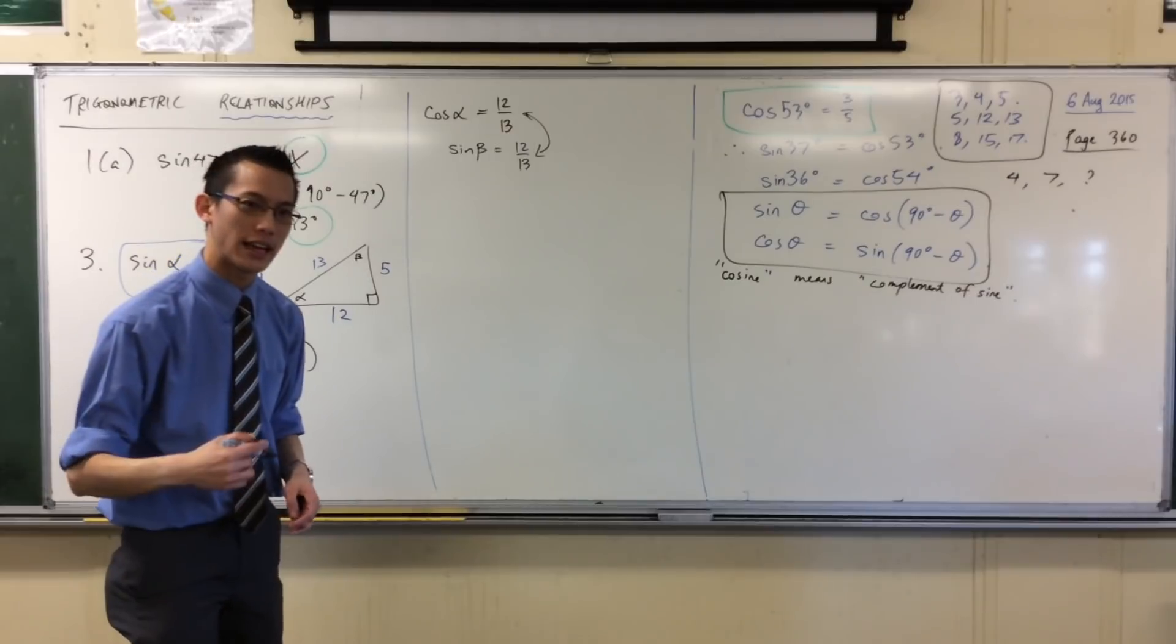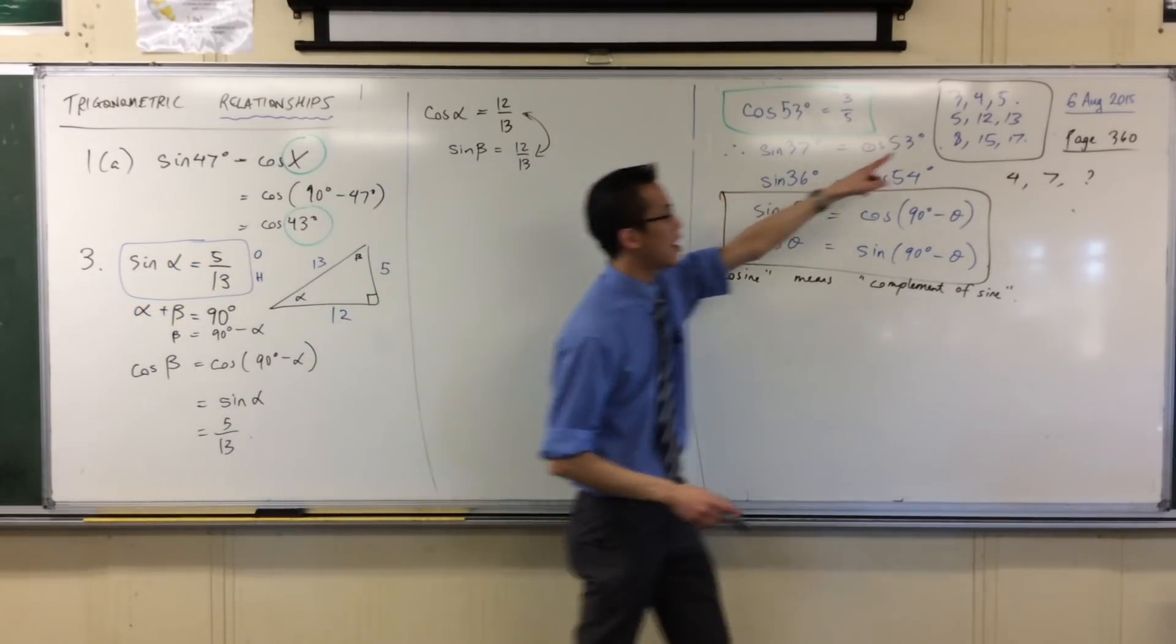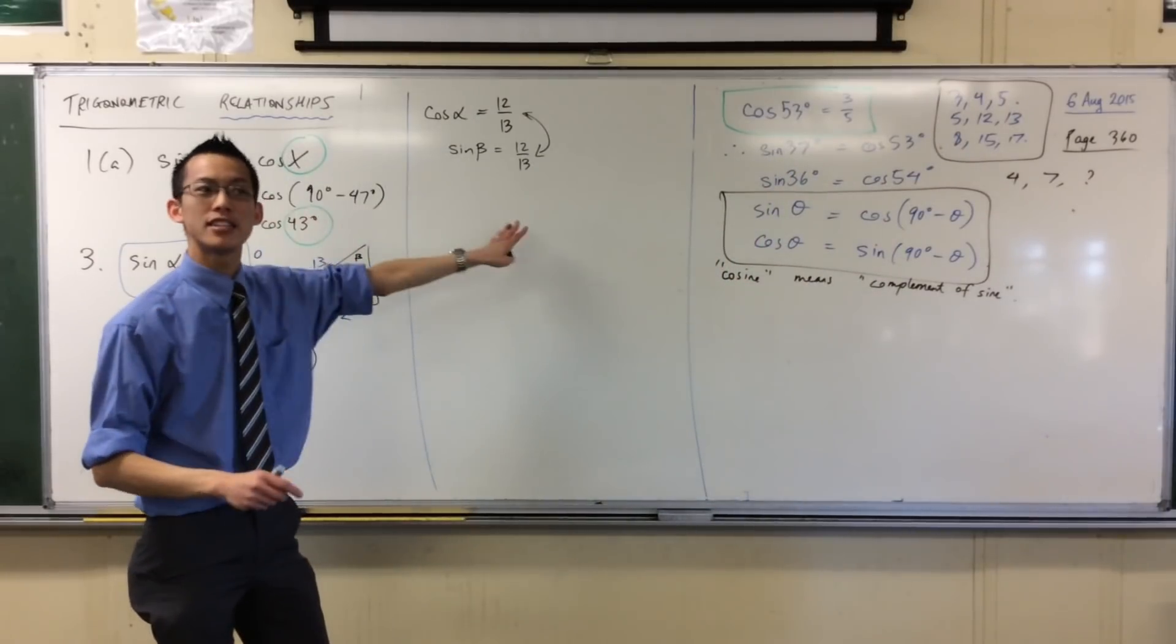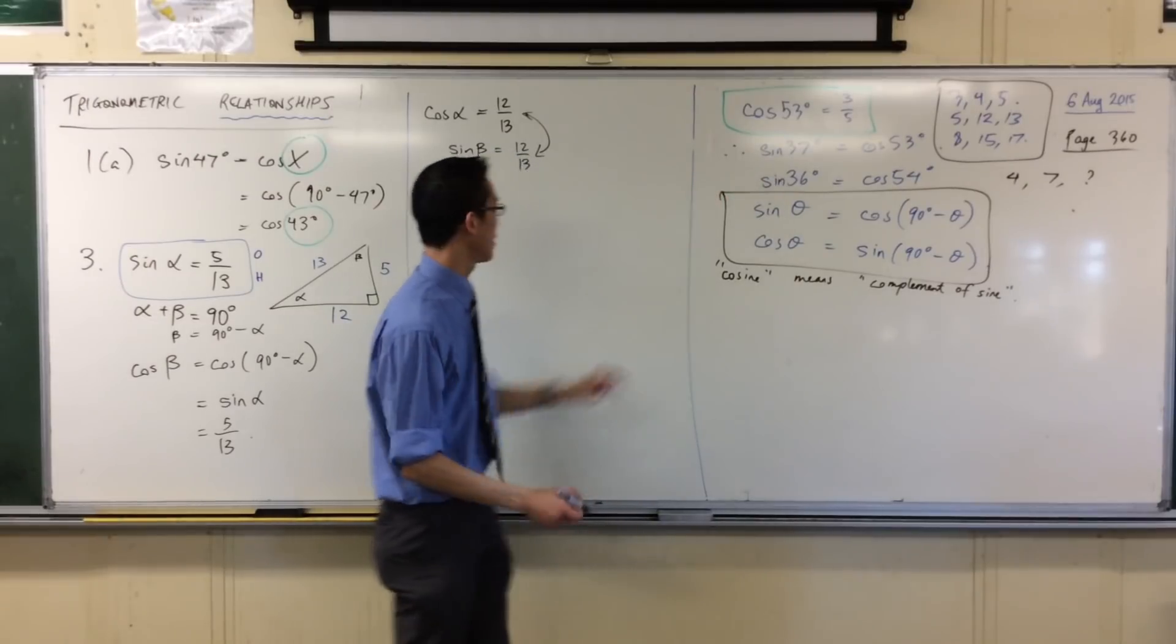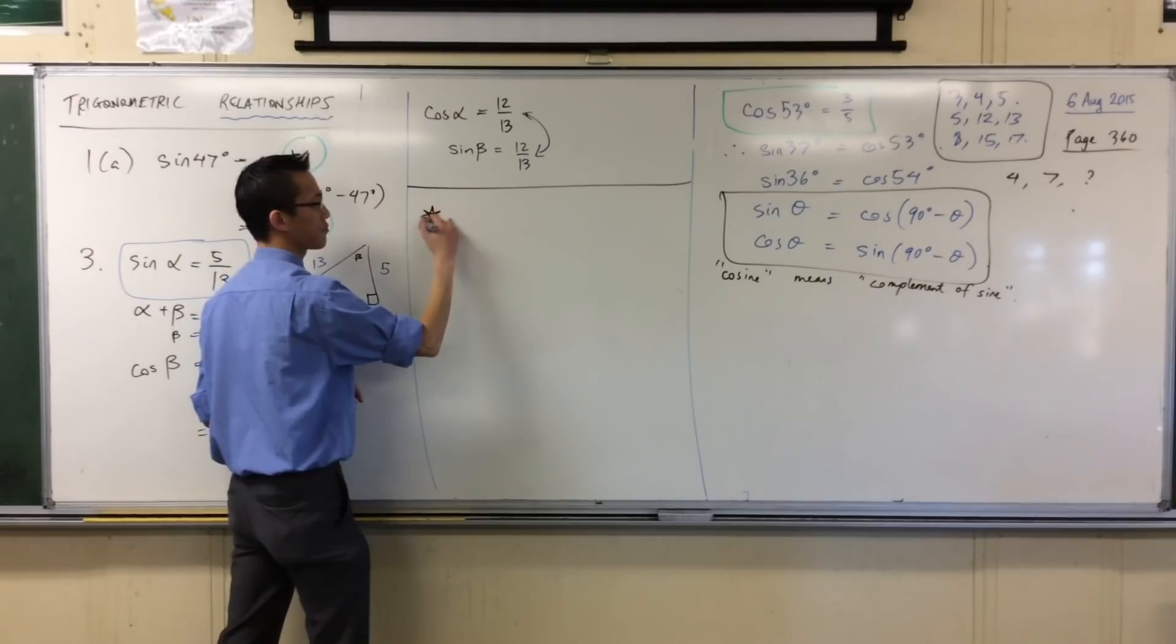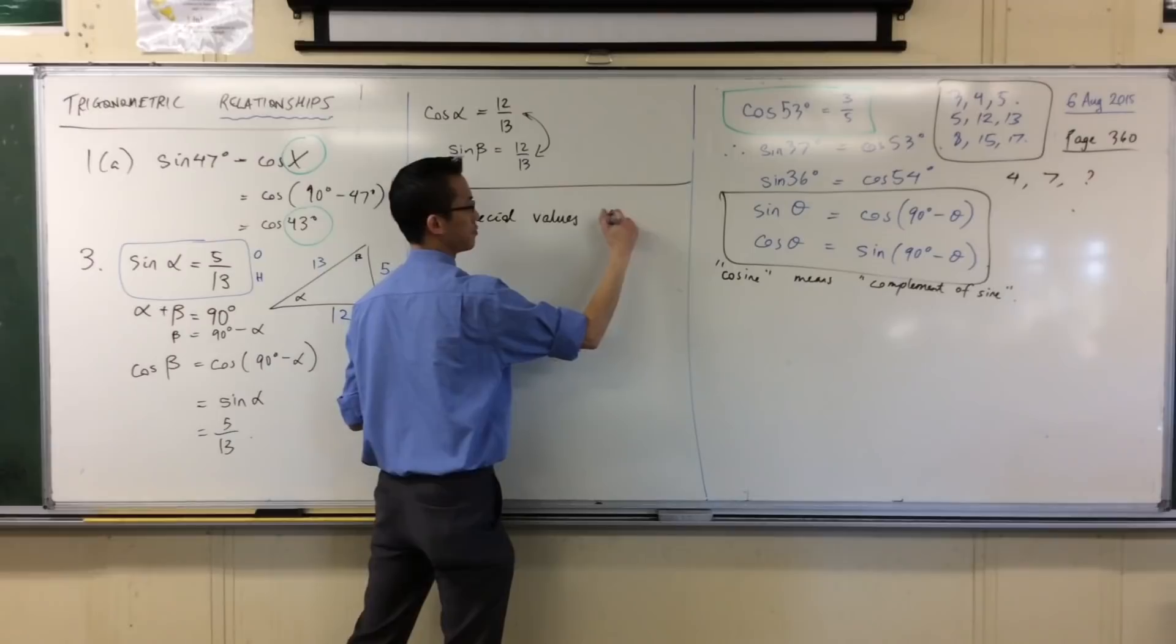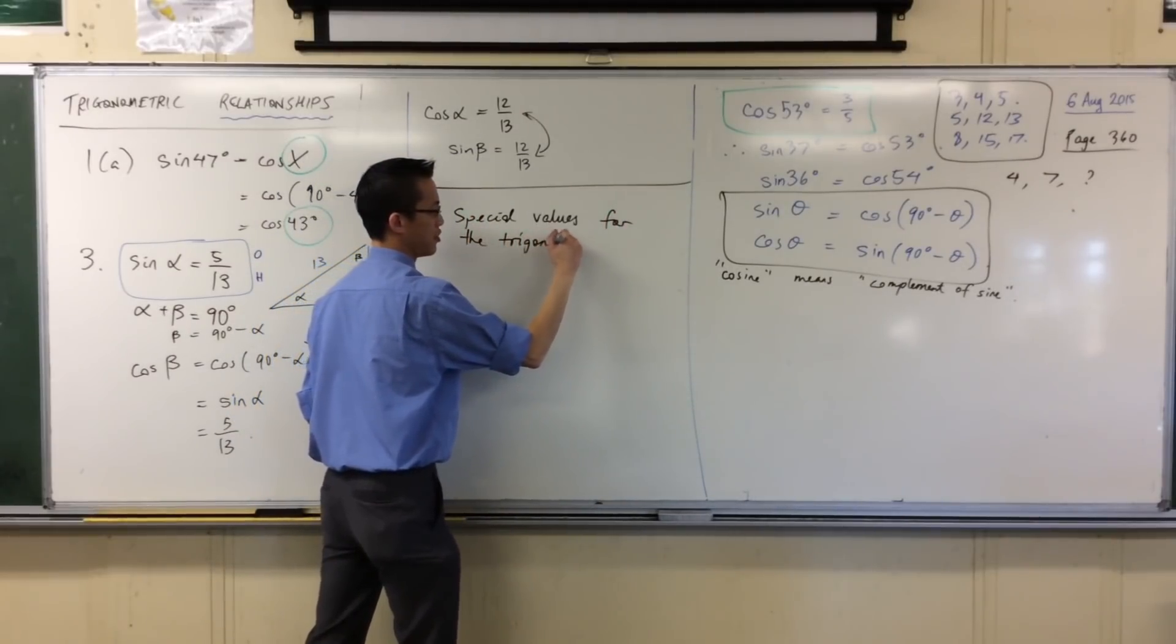Now the same kind of thing happens with trig ratios, but instead of sides, it's angles. There are some special angles, I'm going to list them out for you, where these ratios have special values. So, little subheading under here, which is special values for the trigonometric ratios.